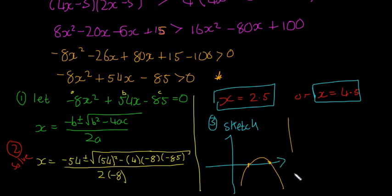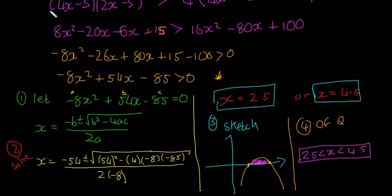And now the fourth step is to look at the original question. And it's asking us to find where minus 8x squared plus 54x minus 85 is greater than zero. So where is it greater than zero or else where is it above the x-axis? Greater than zero for quadratic inequalities means above the x-axis. In this question here, above the x-axis is going to be in between here. So this shaded region. So our final answer is going to be 2.5 is greater than x is greater than 4.5.